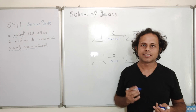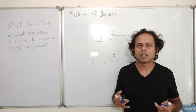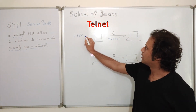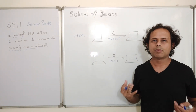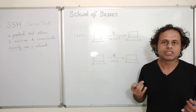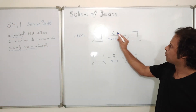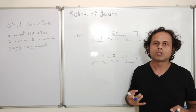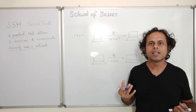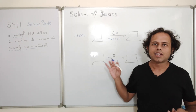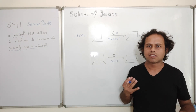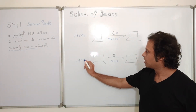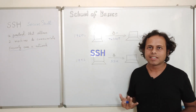Way back in the 1960s, a technology called Telnet was developed. Telnet was a protocol for two machines to access each other and communicate, but it was not secure. As we moved into the internet era and machines needed to communicate over a network, Telnet was no longer a secure option. Therefore, in 1995, SSH was invented as a secure way for two machines to talk to each other and exchange data.